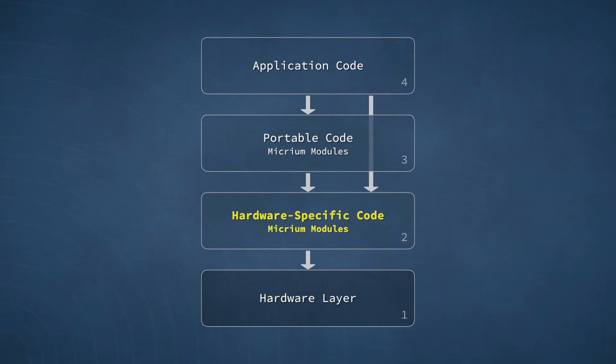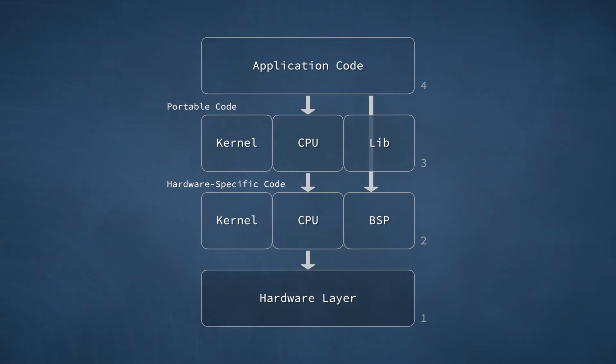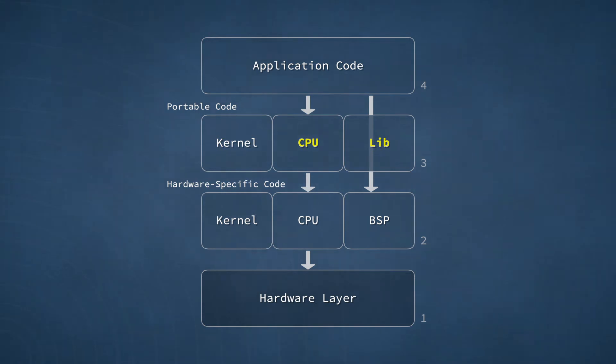Moving down to the second layer, we have the hardware-specific code, which is just above the hardware itself. That's a high-level overview of the relationship between your application and the Micrim OS kernel. Now let's look at these layers in a bit more detail. In the layer of portable code just below the application, we have three blocks. One of these blocks represents the kernel itself. The other two blocks, labeled CPU and Lib, represent software that implements important services used by both the kernel and your application. They are actually part of a larger block of software normally referred to as the Common Module.